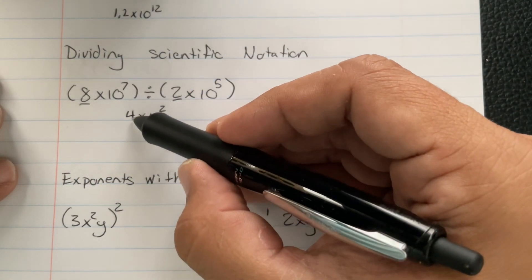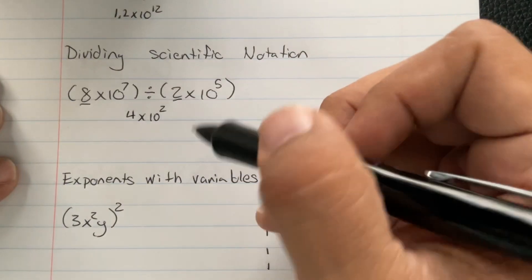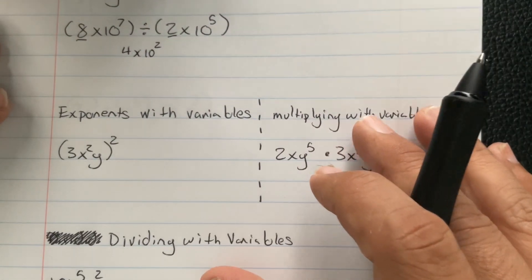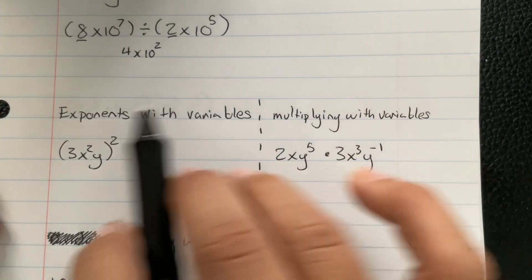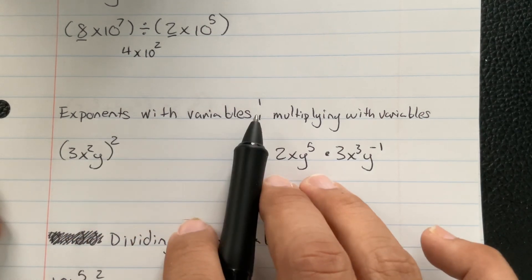See how this number doesn't always end up over 10? There we go. All right. So now we're going to do exponents with variables.